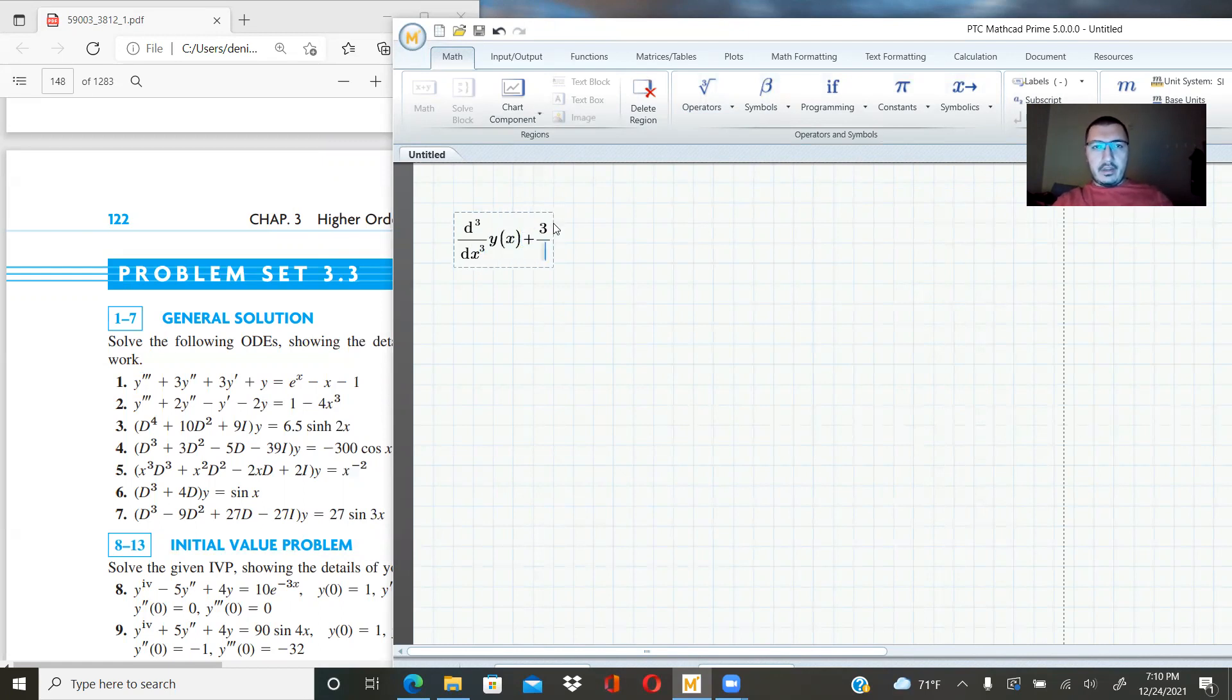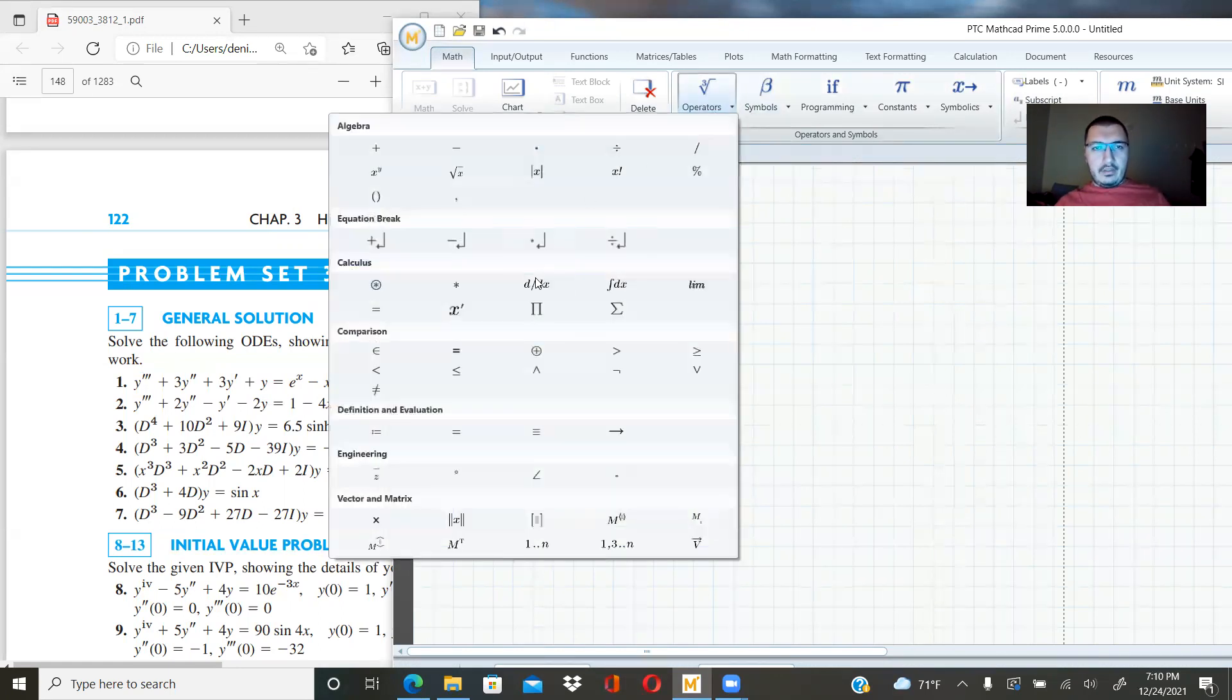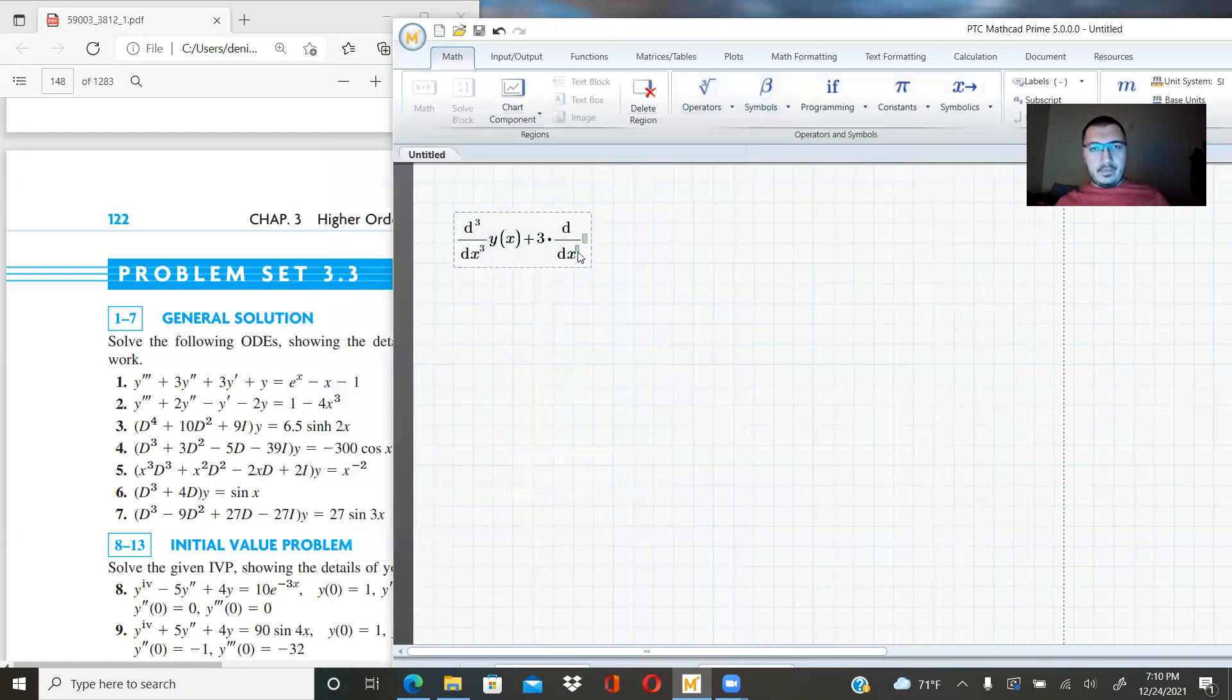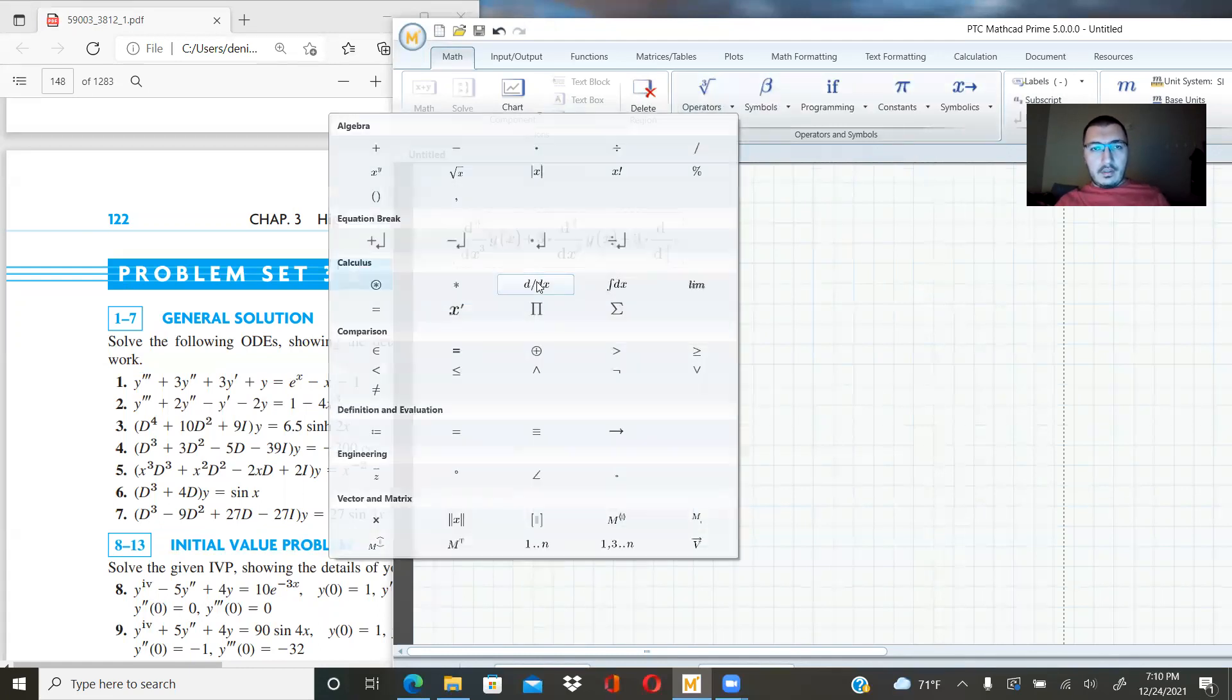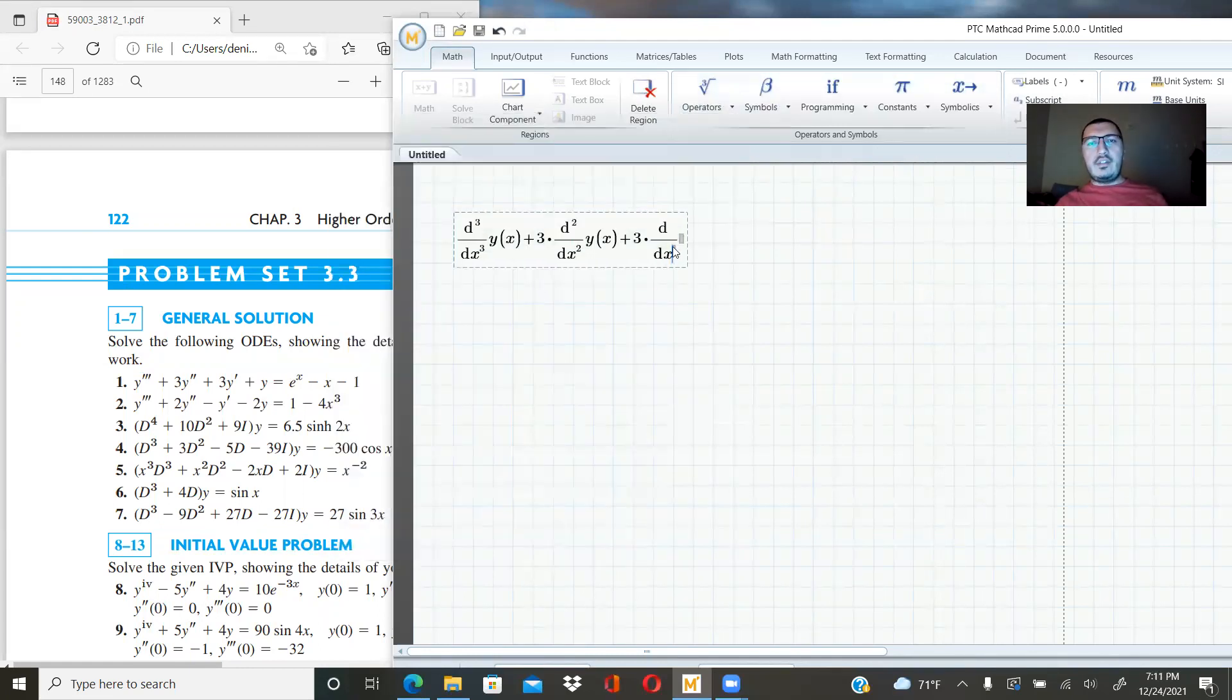Plus 3 times, again, the same thing. X now, this is second degree, plus 3 times. When it is first degree, you don't have to write one. You can write it, it will not matter. But if you keep it empty, this is also okay. Y in terms of x plus the function itself.